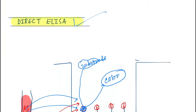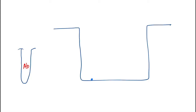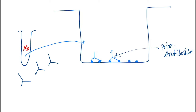In Indirect ELISA, unlike Direct ELISA where we take serum containing antigen, here we take serum containing antibodies. First, antigen is already coated on the well surface. We then add the primary antibodies, which come and bind to the antigens. Next, we add secondary antibodies, which contain the enzyme, and these bind to the primary antibodies.